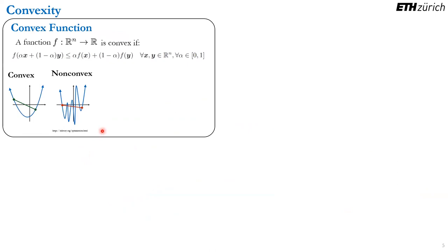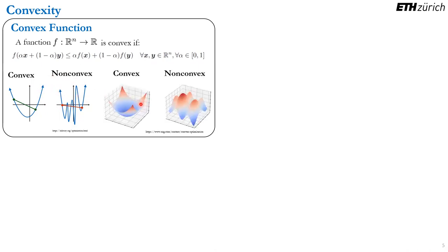Let's define what a convex function is. The mathematical definition says that in a convex function, if we take any pair of points x and y and draw a segment between those points, then all the points of that segment will lie above the function. In a non-convex function, we can find a pair of points for which some points on that segment lie below the function. This applies to 2D and any dimension, and here you can see examples of a convex function and a non-convex function.